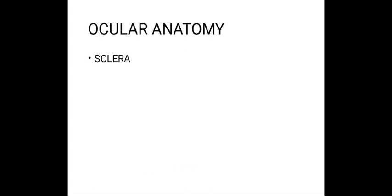The eye is a sphere. Its diameter is about 24 mm and it sits in a pyramidal bony orbit. The wall of the globe has three layers: sclera, uveal tract, and retina. The sclera is the outermost layer — it is tough, fibrous, the white of the eye. The transparent cornea is the most anterior part of the sclera, and most of the focusing power of the eye comes from the curvature of the cornea.